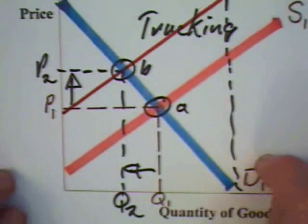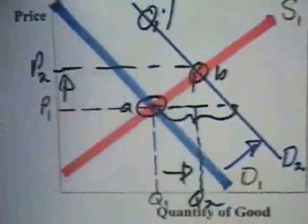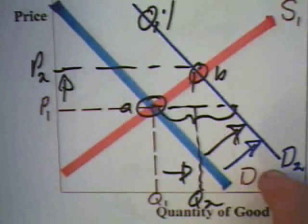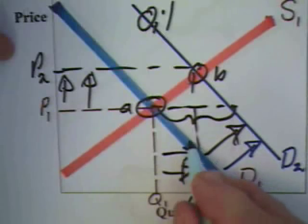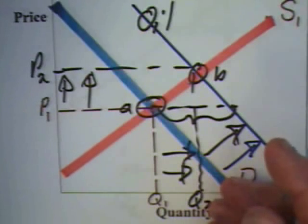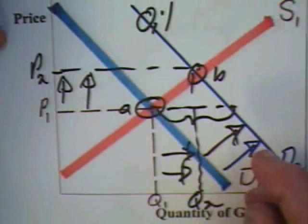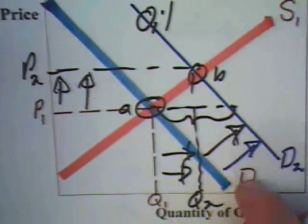Let's suppose too we have a situation where people increase their summer driving. If that is the case, then we should again see an increase in the demand for the good. That should lead to an increase in the price and an increase in the quantity. So oil prices should go up in summer months and gasoline prices should go up accordingly.